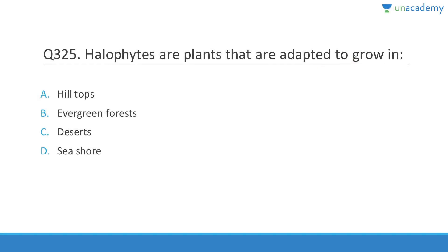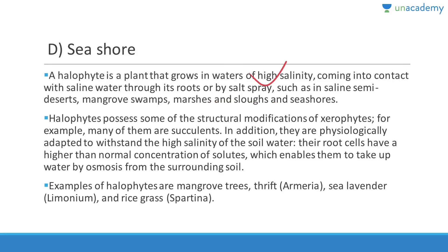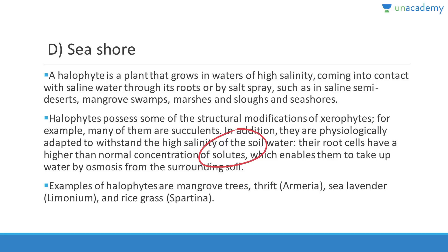Question 325: Halophytes are plants adapted to grow in high-salinity water — 'halo' means salt, 'phyte' means plant. They grow in saline semi-deserts, mangrove swamps, marshes, and seashores. Halophytes possess structural modifications similar to xerophytes; many are succulents with root cells having higher-than-normal solute concentration. Examples include mangrove, thrift, sea lavender, and rice grass.